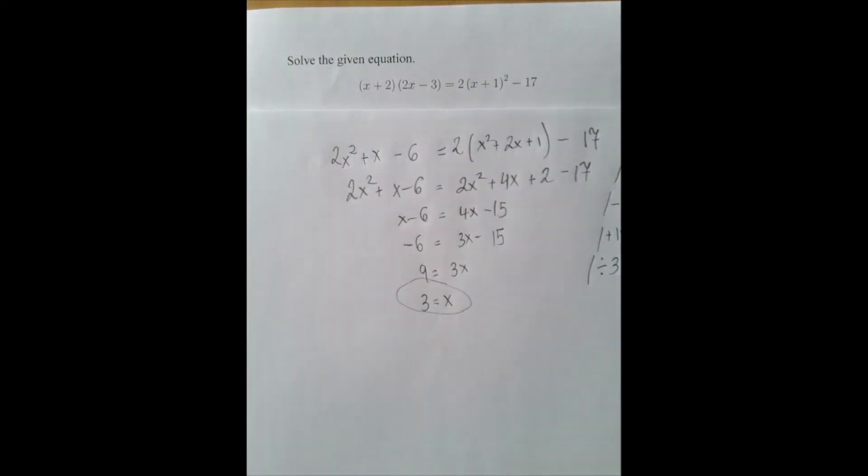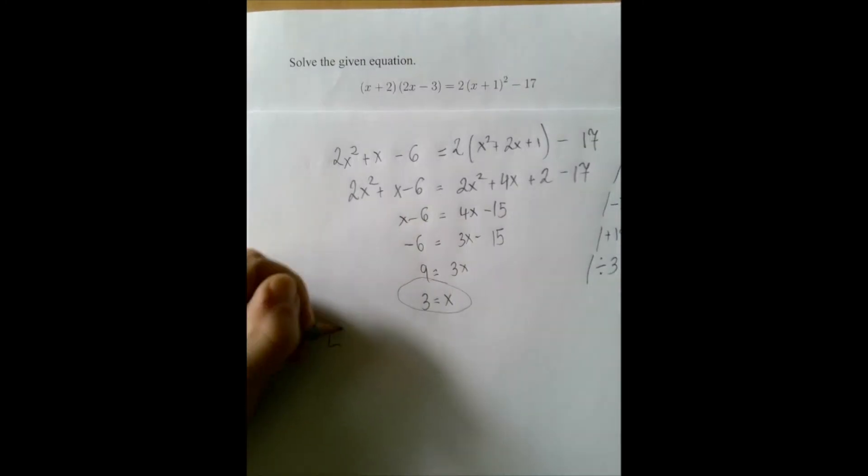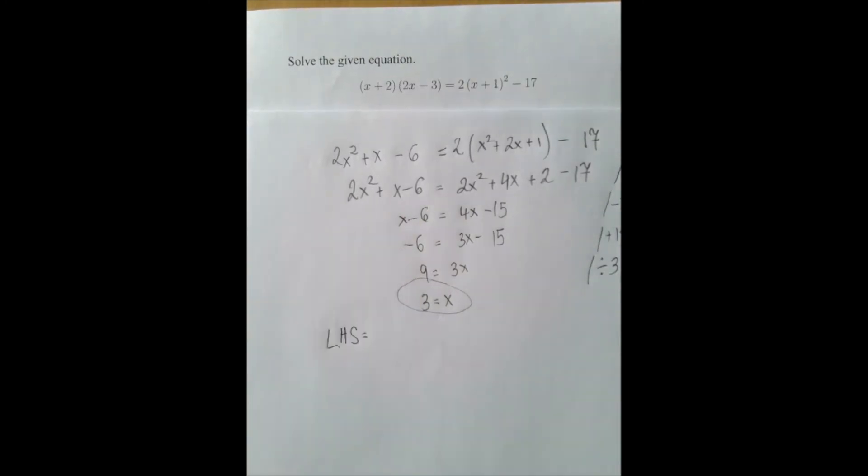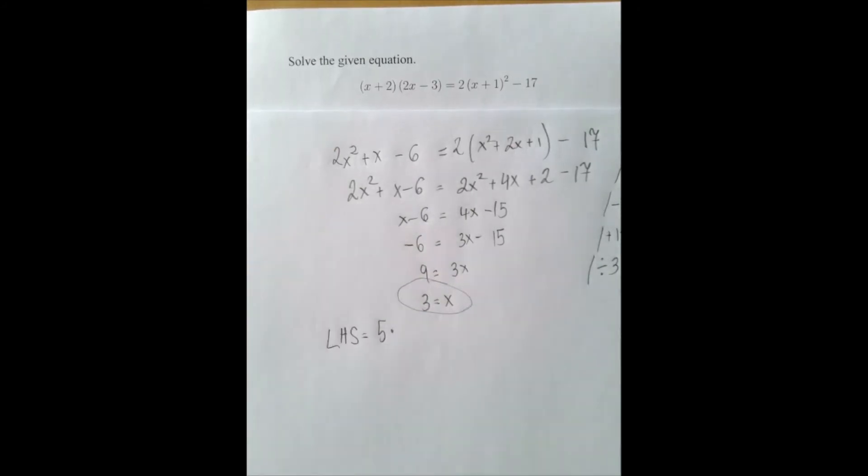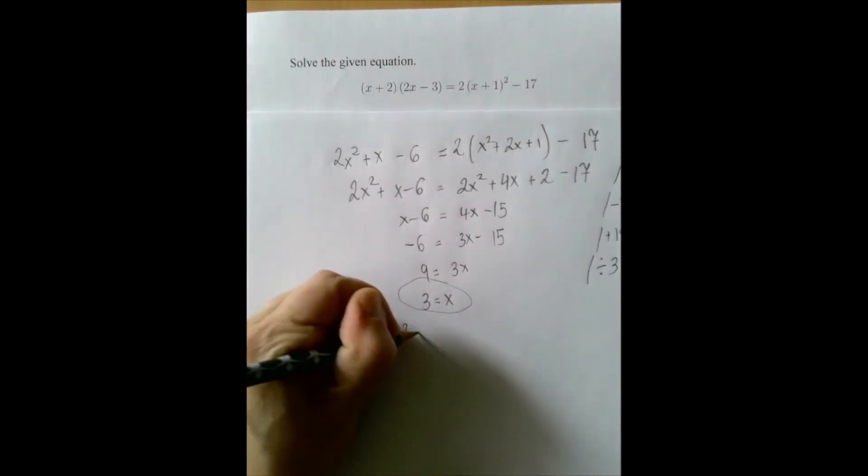When we substitute this expression into the left-hand side, which I am going to denote as LHS for left-hand side, we are going to get 3 plus 2, which is 5, times 2 times 3 minus 3 is 6 minus 3, that's 3, that's 15.